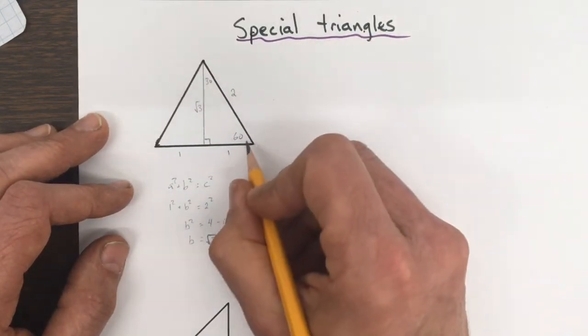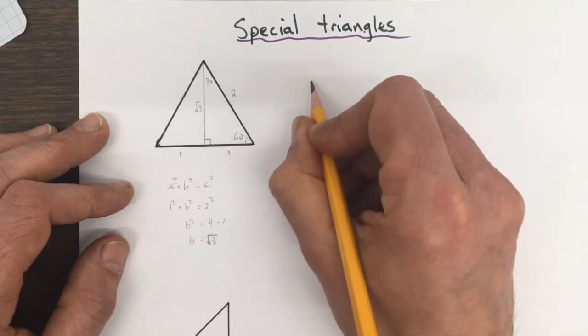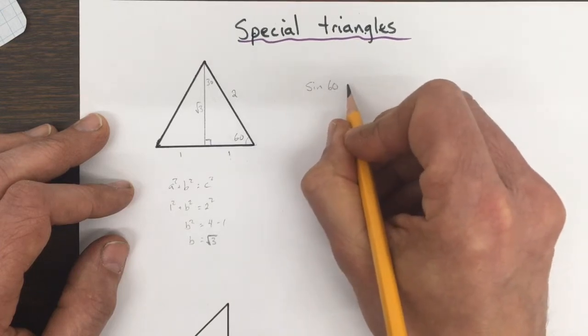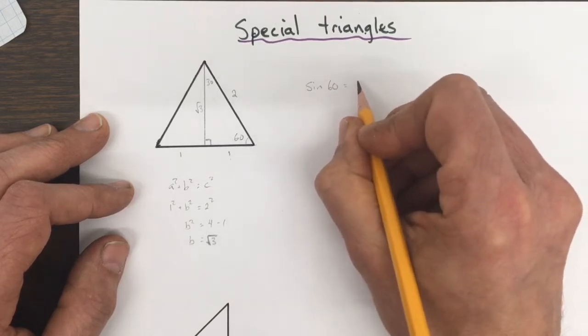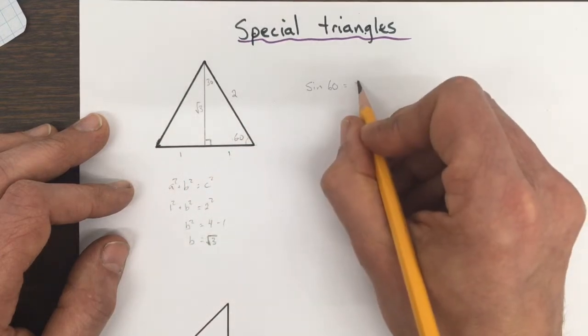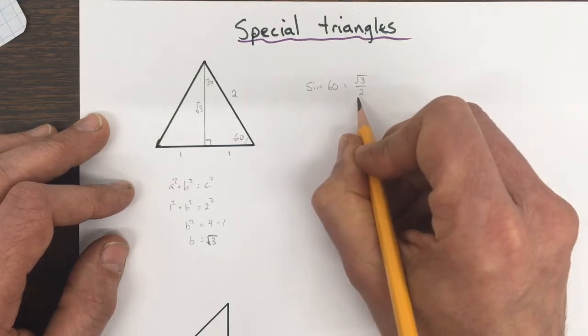So if we look at 60, the angle here, the sine of 60 is equal to opposite over hypotenuse, root 3 over 2. And that's an exact number.